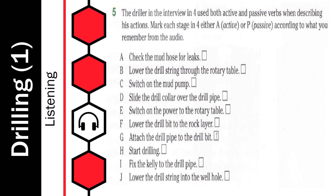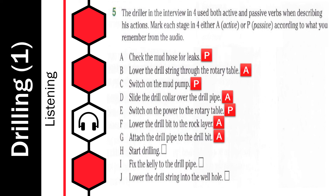Thank you, my students. Now check your answers. In A, he used the passive. In B, he used the active. In C, he used the passive. In D, he used the active. In E, he used the passive. In F, he used the active. In G — the first sentence — he used the active. In H, he used the active. In I, he used the active. And in the last one, J, he also used the active. Well done.